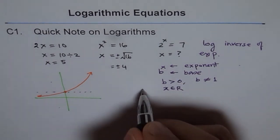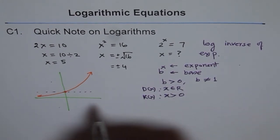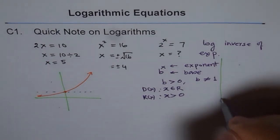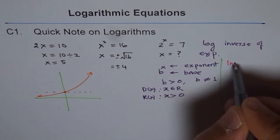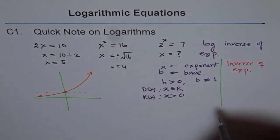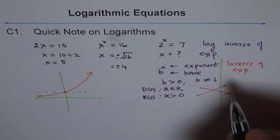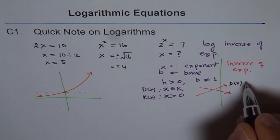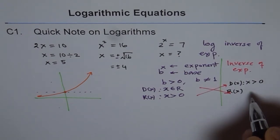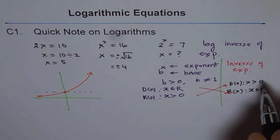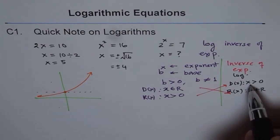The range of the exponential function is y greater than 0 — it is never equal to 0. Now, since log is the inverse of the exponential function, the domain and range swap. So for the logarithmic function, the domain is x greater than 0, and the range is all real numbers. The exponential function has a restricted range but not domain; the logarithmic function has a restricted domain but not range.